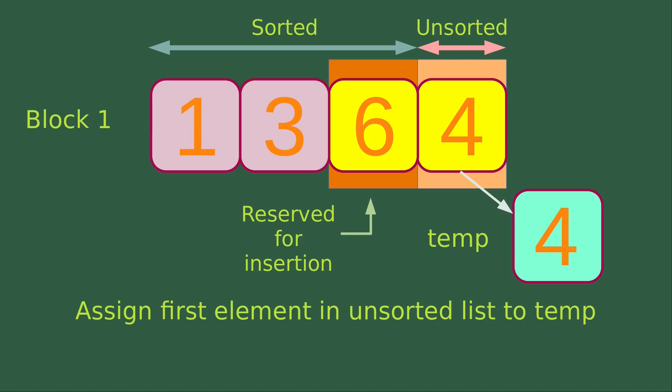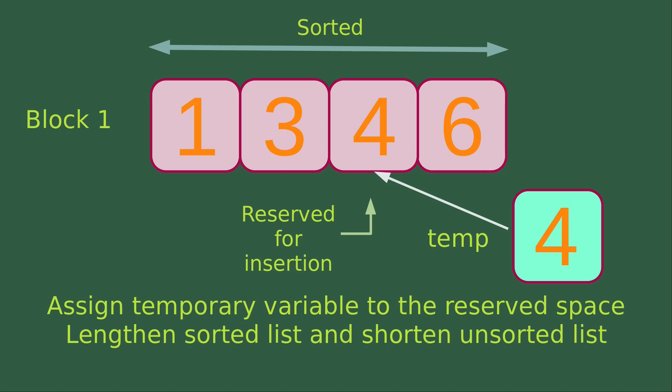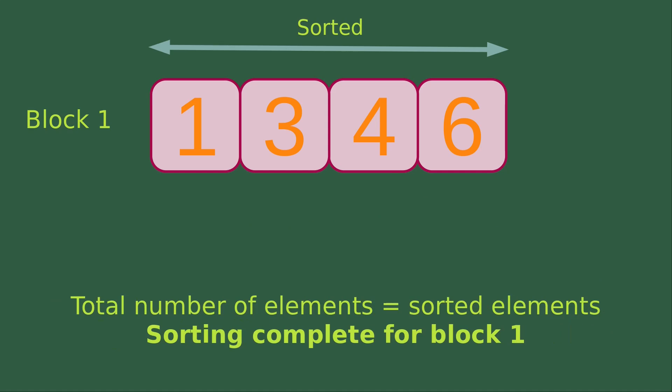We assign the first element in the unsorted list to the temp variable — so 4 has been copied to temp — and the last element in the sorted list is reserved for insertion. Then we copy the element rightwards once, so 6 overwrites the original value of 4. We assign the temporary variable content to the reserved space, so 4 is put into the third position of Block 1. We lengthen the sorted list and shorten the unsorted list; now the sorted list has four elements and the unsorted list has no elements. The sorting is complete for Block 1.